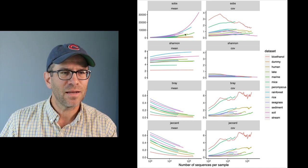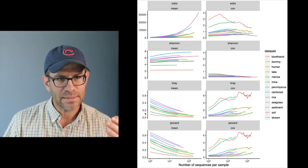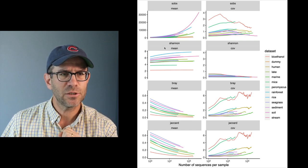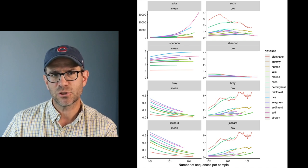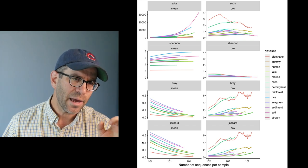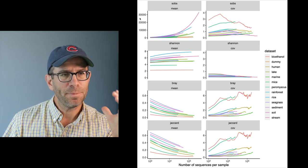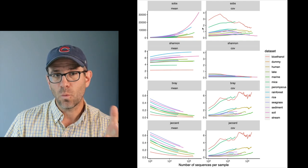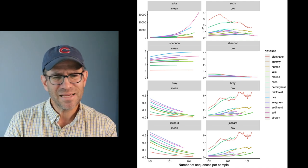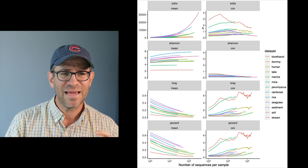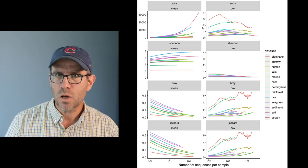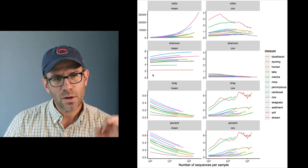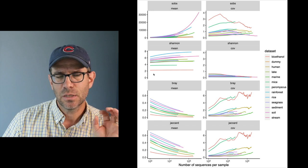One thing I'm not a fan of is that I don't have labels on the y-axis. The left y-axis and right y-axis are different — the left is the mean and the right is the coefficient of variation. Each row is a different metric: richness, Shannon, Bray, or Jaccard. On the left y-axis I'd like some indication that it's the mean of that metric, and on the right, that it's the coefficient of variation. That seems a bit busy since I'd effectively have the same y-axis label for all four rows.